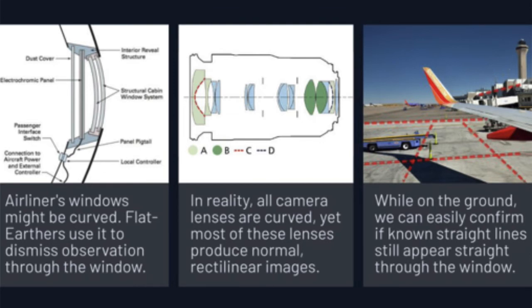I just want to conclude with this because flat earthers love to use this with Virgin Galactic or Concorde jets or high-altitude pilots — they like to say that the window distorts the shape of the Earth. But here's the thing: you can test this at ground level. If you look out the window when you're on the ground, you can easily confirm that known straight lines will still appear straight through the window, and lo and behold, they almost always do. If you can just look when you're on the ground at something that's straight and it's straight through the window, there's not going to be distortion when you're up in space. This is a simple test that debunks all those window arguments that flat earthers have.